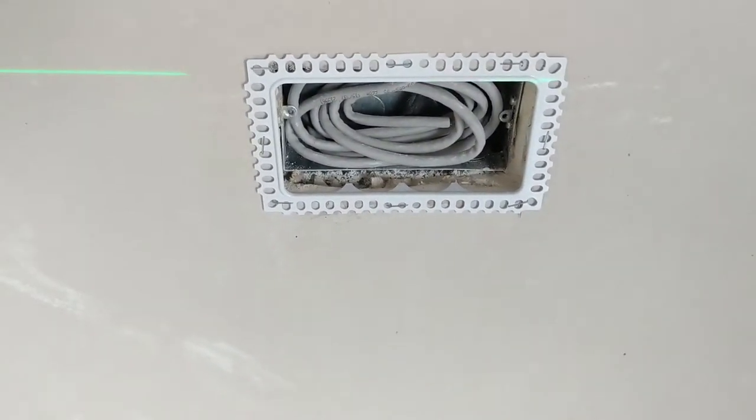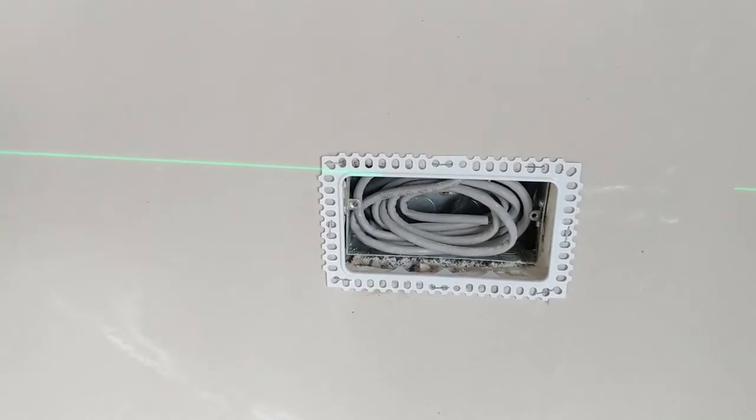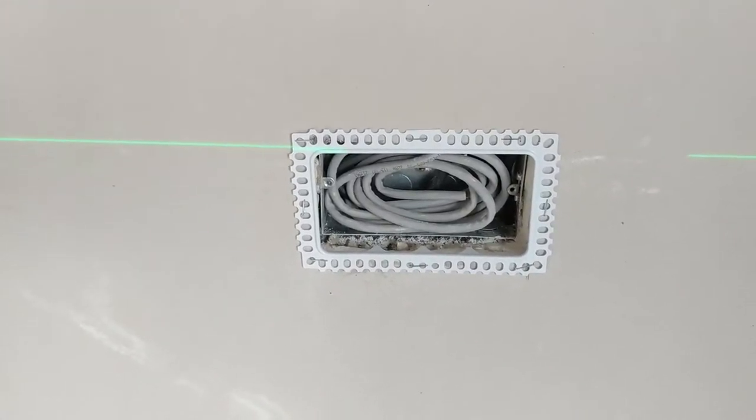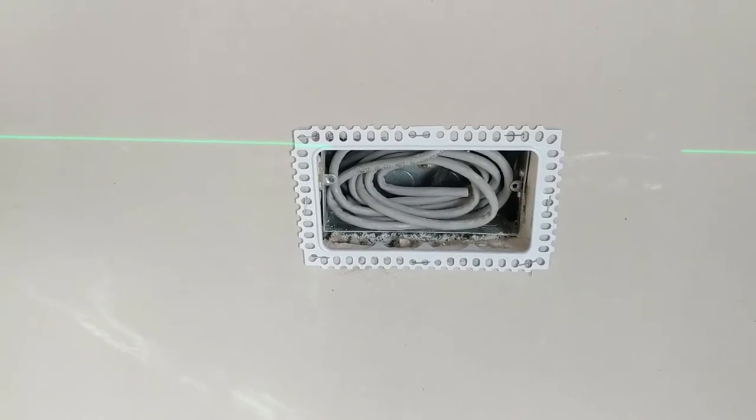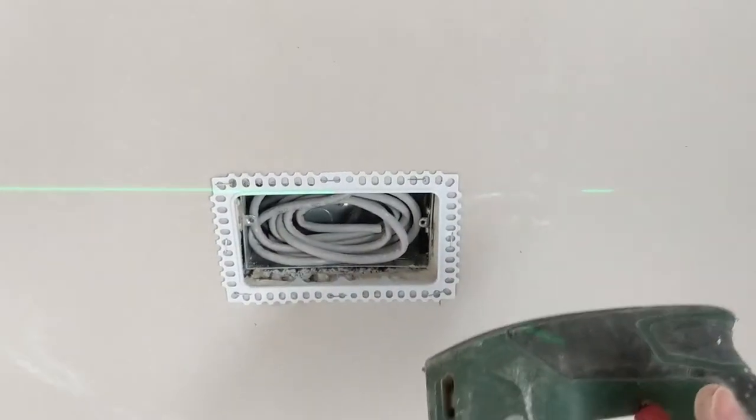Now, you can use an adhesive to stick those back on if you want, says the instructions. But the way that the rest of the plasters are putting the beading up, the metal beading on the corners, they're just tacking it with a staple gun.